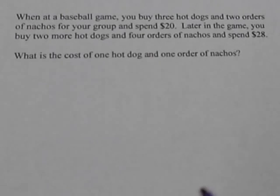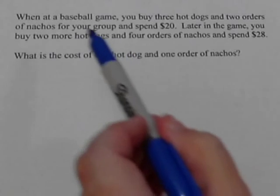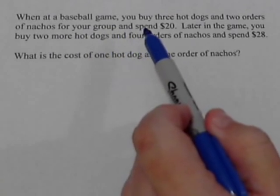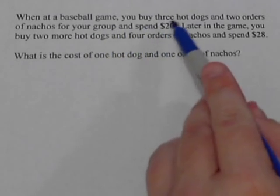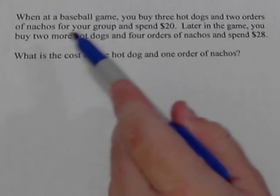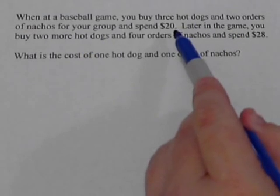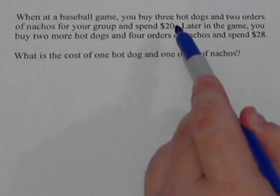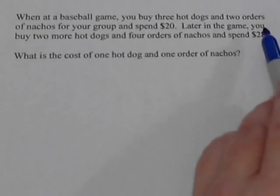We're at a baseball game and we're going to order some food. Early in the game, you get up to buy food for your group and you buy three hot dogs and two orders of nachos. The total cost comes out to be twenty dollars.